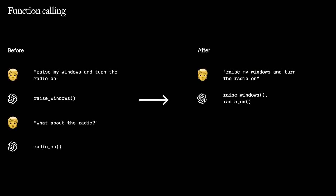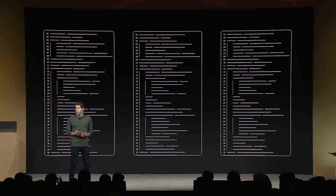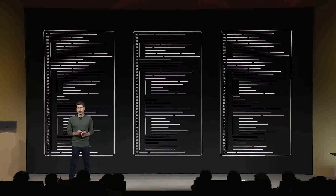GPT-4 Turbo also comes with two cool API features. The first is an improvement on function calling that lets you describe multiple functions for your app or external APIs to its models, and have the model intelligently choose to output a JSON object containing arguments to call those functions. The second is the new seed parameter, which enables reproducible outputs by making the model return consistent completions, a little bit like Midjourney can to maintain a consistent image.